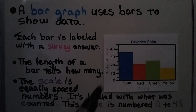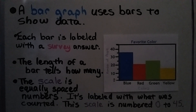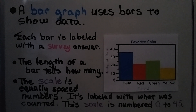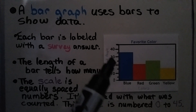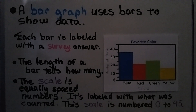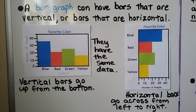The numbers coming up along the side are called the scale. The scale is equally spaced numbers and it's labeled with what was counted. This scale is numbered from 0 to 45 — it starts at 0, goes by tens, and goes up to 45. A bar graph can have bars that are vertical or bars that are horizontal.